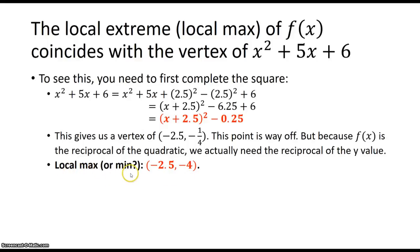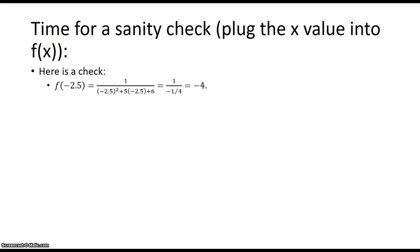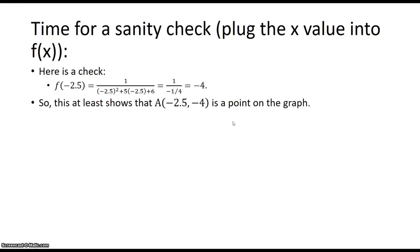Right now we're leaving open whether it's a local max or a min — we haven't plotted the graph yet. Time for a sanity check: let's plug the x value into f of x directly. All we did was plug the x value into the completed square, but we do a sanity check by plugging negative 2.5 directly into f of x. We know the answer is negative 1 over 4, and it turns out we do get negative 4. So it is a point on the graph.